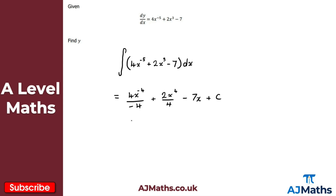Simplifying: 4 over minus 4 is minus 1, giving minus x to the minus 4. Then 2 over 4 is a half, giving x to the 4 over 2. And we have minus 7x plus c. If we want to make it neater, we can write it as x to the 4 over 2, minus x to the minus 4, minus 7x plus c. And that brings us to the end of this video on an introduction to integration. In the next video, we're going to take a look at definite integrals.